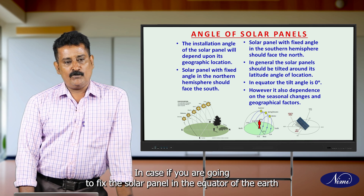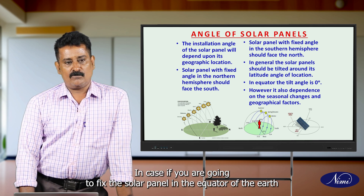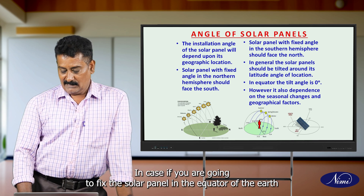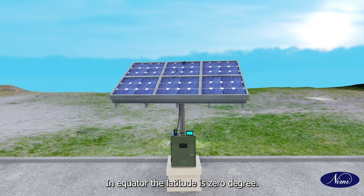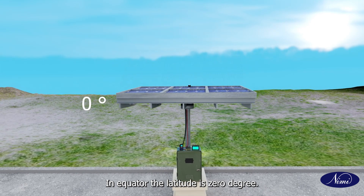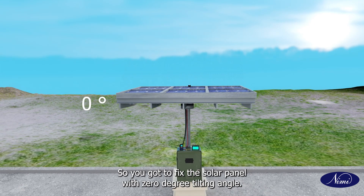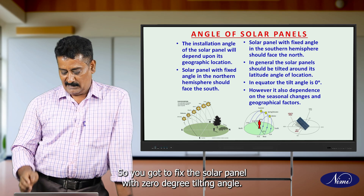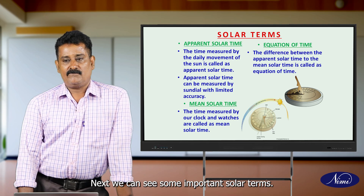In the case of fixing the solar panel at the equator, where the latitude is 0 degrees, you have to fix the solar panel with a 0 degree tilting angle.